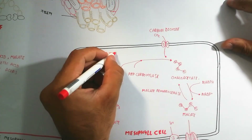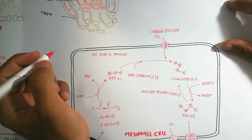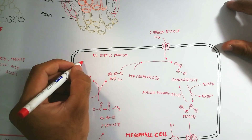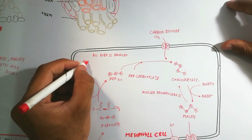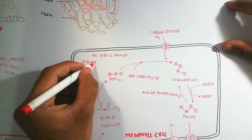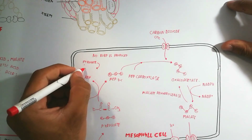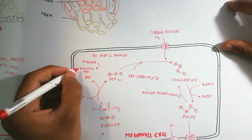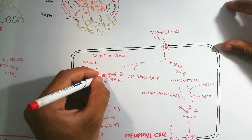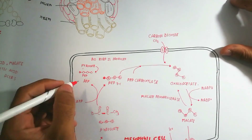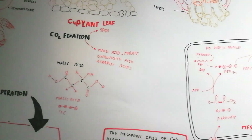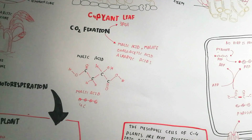Zea mays (maize/corn) and sugarcane are the best examples of C4 plants, as the C4 cycle was first discovered in sugarcane. Pyruvate is converted back into phosphoenolpyruvate (PEP), the three-carbon compound, which combines with CO2 to give the four-carbon oxaloacetate — that is why it is known as a C4 plant. Thanks for watching, please subscribe to the channel.